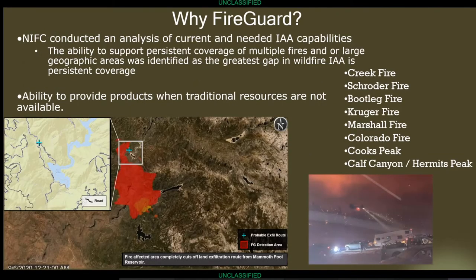Why are we using FireGuard? We're using it to fill that gap — consistent, persistent coverage of either multiple fires or a large geographic area, like a whole forest or the entire Great Basin. Most of the capability we have now can go from a division up to potentially mapping a whole fire over a given time, but nothing that can cover multiple fires and multiple areas at one time. We're also able to provide coverage and resources when traditional capabilities are not available.